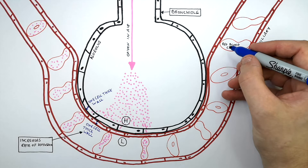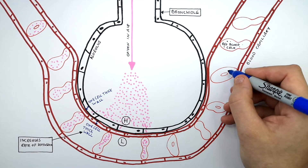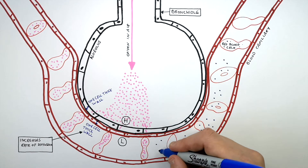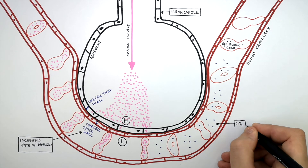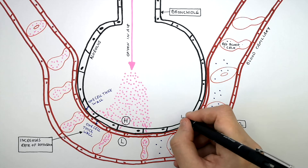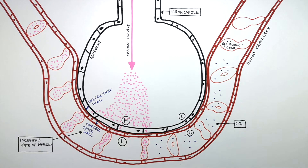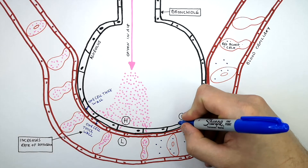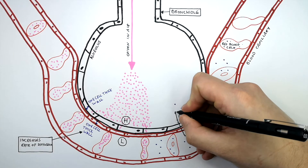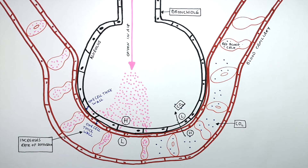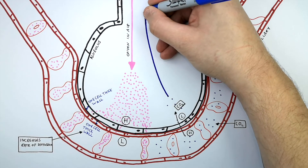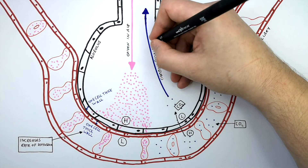The red blood cells entering the capillaries at the alveolus in the lungs will be containing low oxygen levels and higher CO2. The carbon dioxide is going to diffuse from the high concentration inside the blood into the low concentration of CO2 in the alveolus. So CO2 diffuses from the blood and into the alveolus, and then when we breathe out we exhale air which has a higher concentration of carbon dioxide in it.